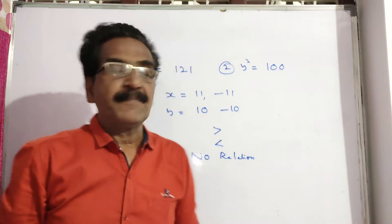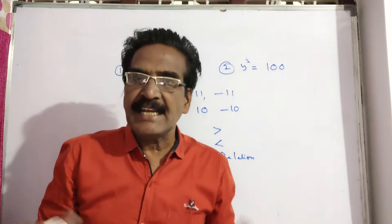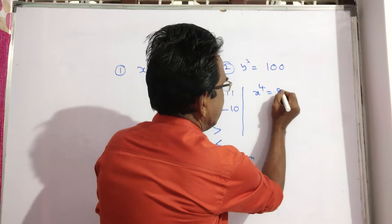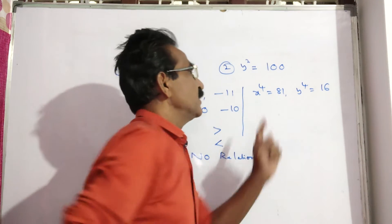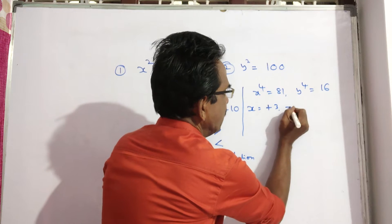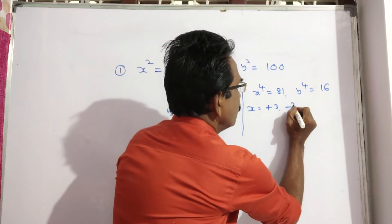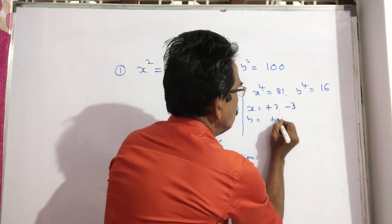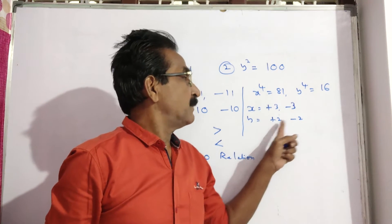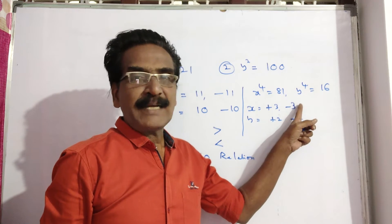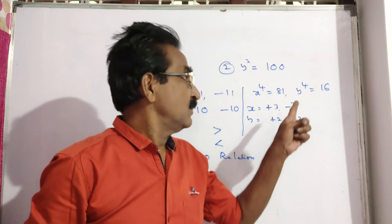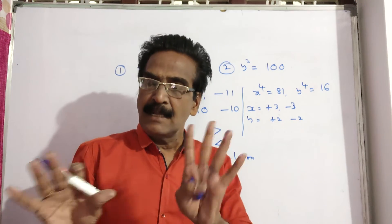Friends, remember this applies not only to x² and y², but for any even power. Suppose x⁴ = 81 and y⁴ = 16. Then x⁴ = 81 implies x = ±3, and y = ±2. Here also you get no relation: 3 is greater than +2 and −2, but −3 is less than +2. So one time greater than, one time less than — you cannot establish any relation. Your option is no relation.